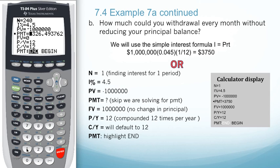If we go up to our N, we want to find the interest for only one period, so we'll put in just one here. We'll keep the interest rate the same, our present value the same for negative $1 million.